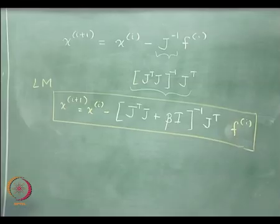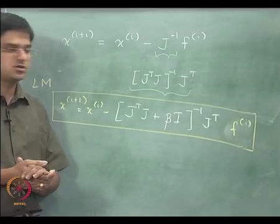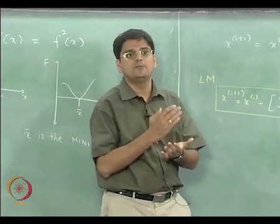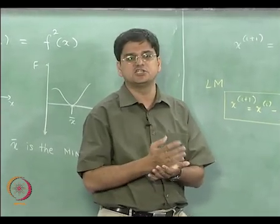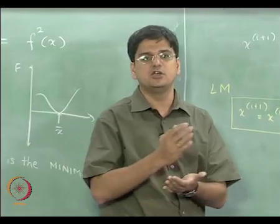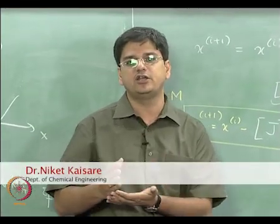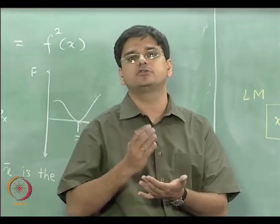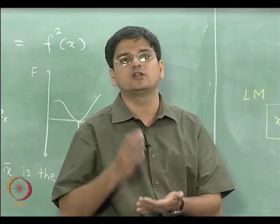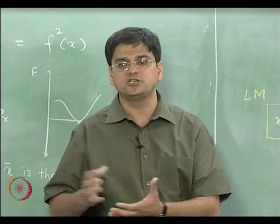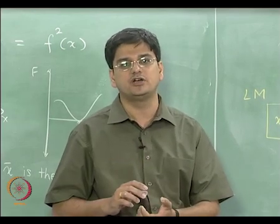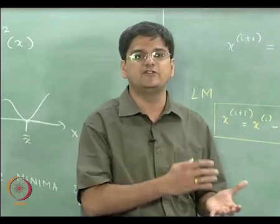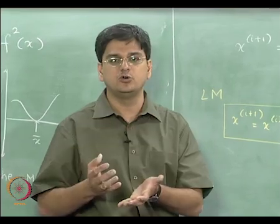Let us take a look at what this particular lecture has covered. What we covered is essentially the multivariable extension for fixed point iteration. We saw that fixed point iteration had a linear rate of convergence for a multivariable system. We also saw the stringent sufficient conditions for stability of the fixed point iteration. Then we went over to the multivariable case of Newton-Raphson's method.